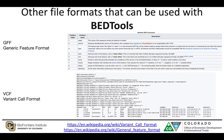There are other files that bedtools can take as input. These include the generic feature format, or GFF file format, which is more complicated and detailed and has been used a lot in annotating gene features in genomes. Another file format bedtools can use is the variant call format, or VCF file, which encodes variants within the genome and is also very detailed depending on the variant calling algorithm used.